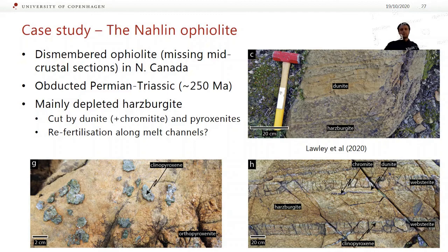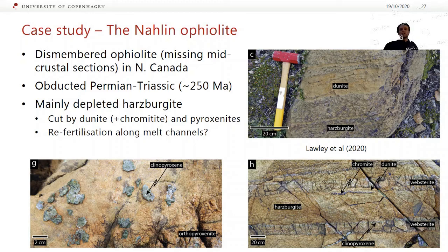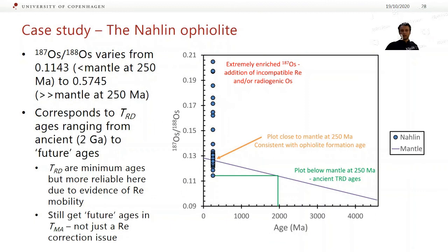Let's talk about another case study of recent oceanic lithosphere formation — the Narlin ophiolite. Most of this is taken from Loletal 2020, and this is an ophiolite up in northwestern Canada. It's a pretty messed up ophiolite — it's been chopped up into chunks, there are missing crustal sections, and it was probably obducted in the Permian or Triassic about 250 million years ago. Again, the majority of it is depleted harzburgite, but it's cut by dunites — sometimes with chromitites associated with them — and pyroxenites. In the top right picture you can see a dunite channel cutting through the harzburgites.